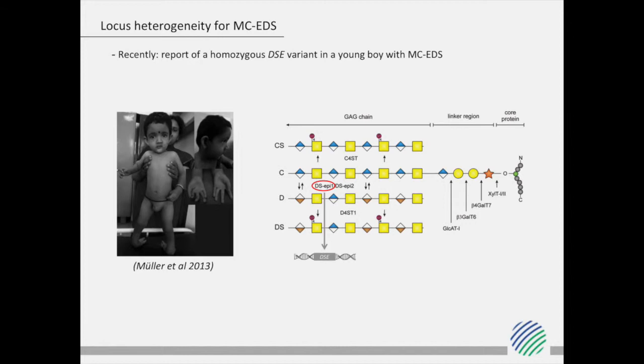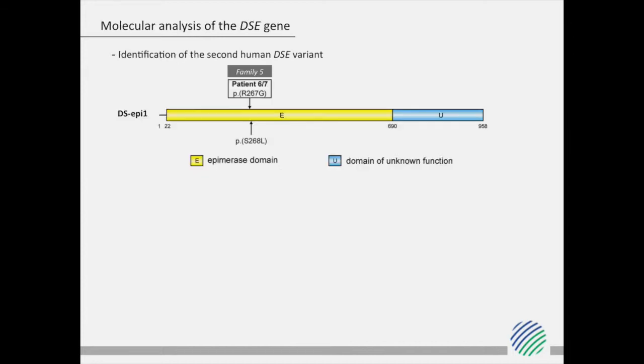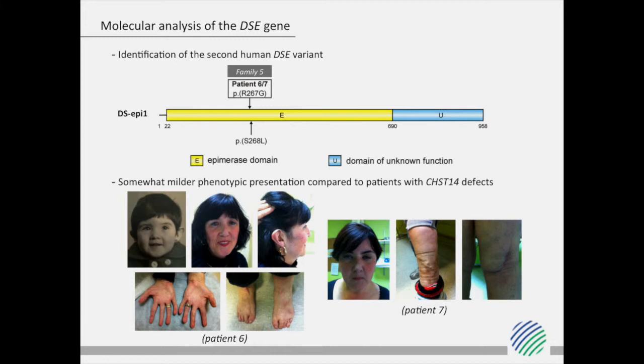Recently, locus heterogeneity was proposed for musculocontractual EDS, based on the identification of a single patient with mutations in the DSE gene, encoding dermatan sulfate epimerase 1. Since we could not identify CHST14 mutations in family 5, we screened the DSE gene and identified a second missense mutation located adjacent to the previously reported mutation. Clinical evaluation of all patients showed that DSE defects are associated with a somewhat milder phenotype compared to CHST14 defects, without severe complications of the urogenital, gastrointestinal, respiratory, ocular, and central nervous systems. Nevertheless, due to the limited number of patients with DSE mutations, it is currently impossible to make clear clinical distinctions between defects in these two genes.